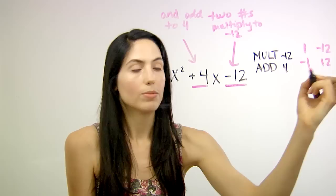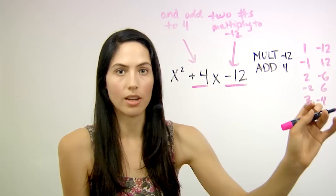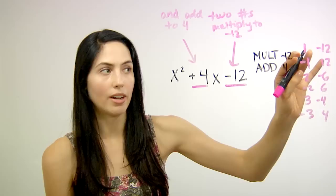You could have 2 and negative 6, negative 2 and 6. It's a little tedious, but you're writing all your options, 3 and negative 4, negative 3 and 4. And those are all your possible pairs of numbers that will multiply to negative 12.